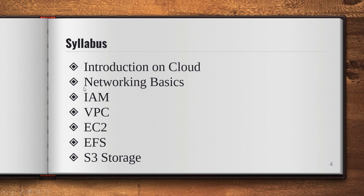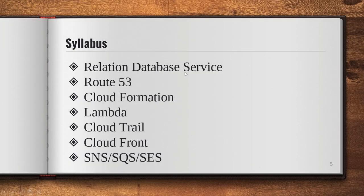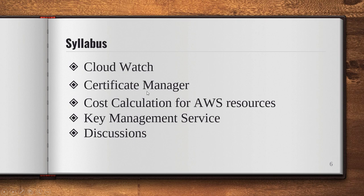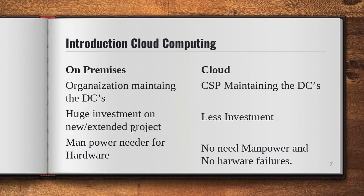IAM is about user management of AWS. VPC is Virtual Private Cloud, related to VPN or Virtual Private Network. EC2 is like a virtual computer or server — it is the basis of AWS. EFS and S3 are storage services. RDS is a database service. Route 53 is a networking and security service. We also cover CloudFormation, Lambda, CloudTrail, SNS, Simple Notification Service, SES Simple Email Service, CloudWatch, Certificate Manager, cost calculation, and key management.